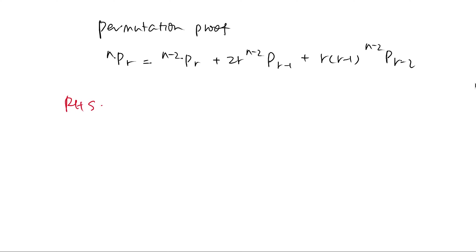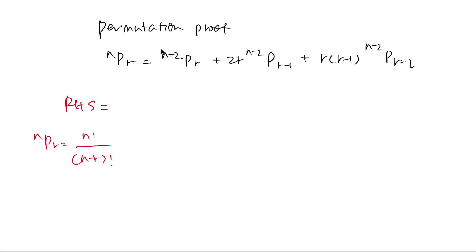The first thing is to change all the permutations into the standard factorial form by using nPr equals to n factorial over n minus r factorial — the top part factorial and then the difference between the top and bottom factorial.